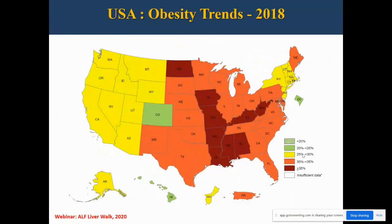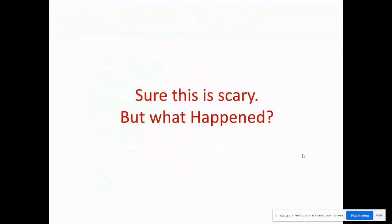Looking at the 2018 trend — another eight years from that point — a lot of the country is in the greater than 35% prevalence range, with many pockets in the 30 to 35% range. There are hardly any states in the 20 to 25% or less range. So this is scary.